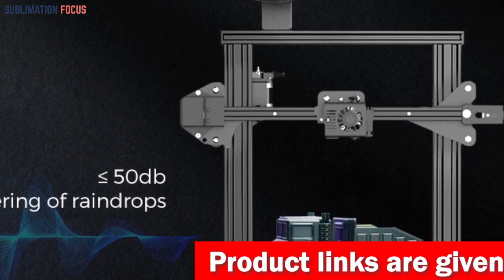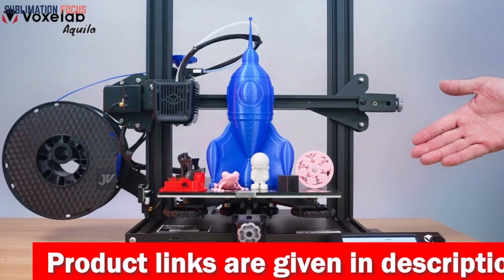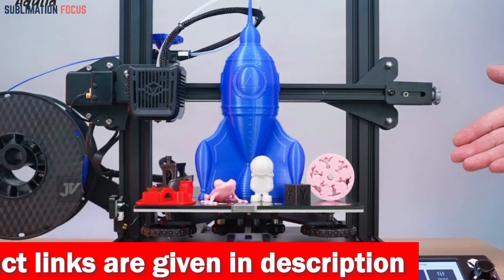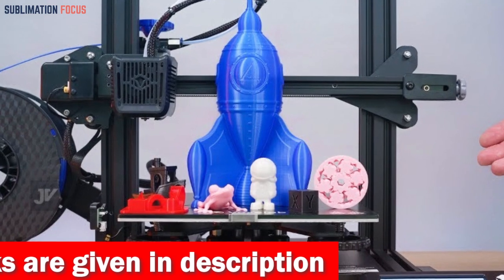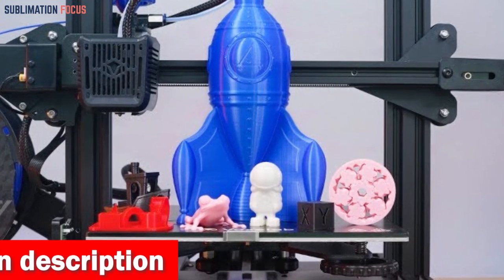Get ready to experience the epitome of efficiency. The Aquila X3 embraces high-speed printing, reaching up to an impressive 200mm per second. It's like having your own time machine, allowing you to bring your ideas to life at an astonishing pace.